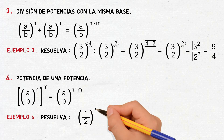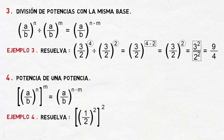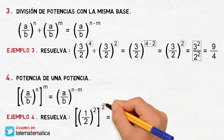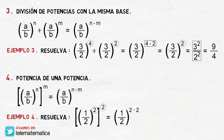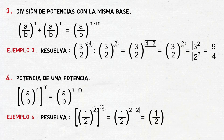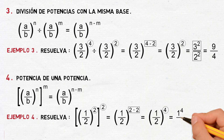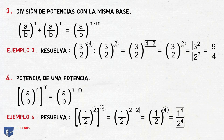Resuelva: 1 medio elevado al cuadrado, elevado al cuadrado. Aplicando la propiedad, esto va a ser igual a conservar la base 1 medio y multiplicar los exponentes 2 por 2. Resolviendo la operación, esto nos quedaría 1 medio elevado a la cuarta. Aplicando la propiedad de potencia de un número racional, esto va a ser igual a elevar a la cuarta el numerador y elevar a la cuarta el denominador. Resolviendo las potencias, esto va a ser igual a 1 dieciséis avos.